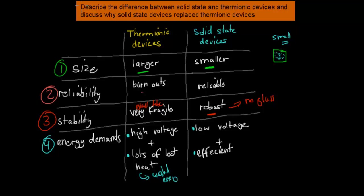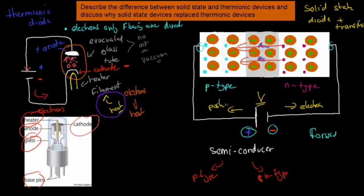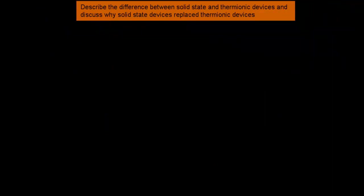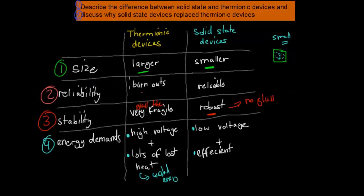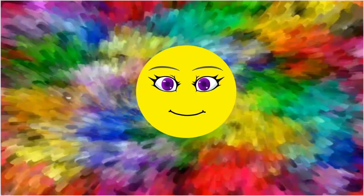So for the dot point — describe the difference between solid state devices and thermionic devices, and discuss why solid state devices replaced thermionic devices. The first part was about how they're set up: one uses glass tubes and heater filaments, whereas the other uses semiconductors. The second part covered the differences in size, reliability, stability, and energy demands. I hope that was useful, thank you for watching.